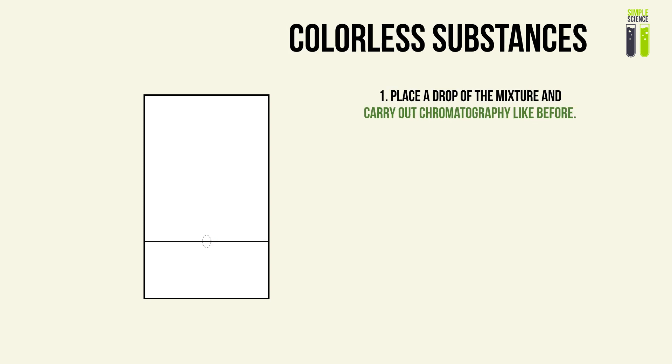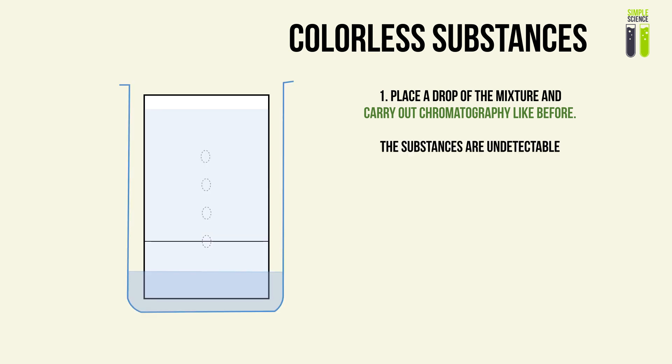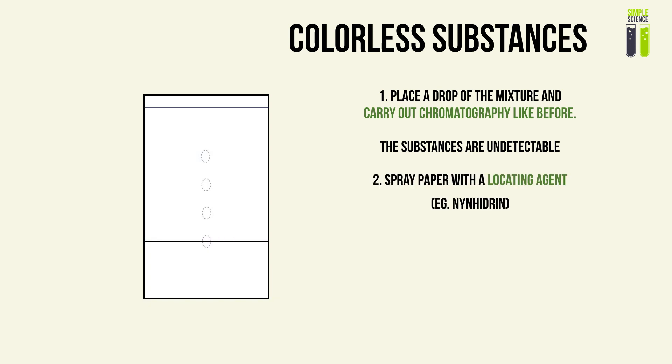What happens if the substance is colorless? We conduct the process the same as before — place a drop of the mixture onto the chromatogram, put it in a solvent, allow the solvent to rise, and the substances will separate. We just can't see them. So we spray the chromatogram with a locating agent. A common locating agent for colorless substances like amino acids is ninhydrin. Once sprayed, the colored spots appear and we can conduct our calculations.